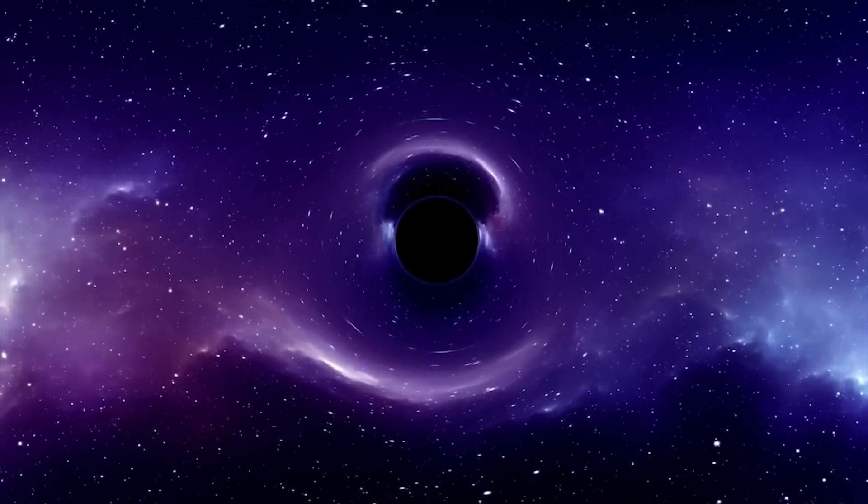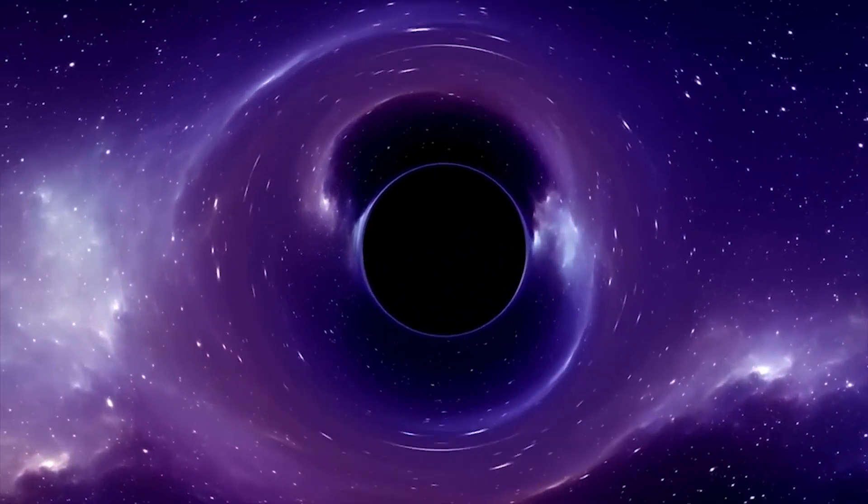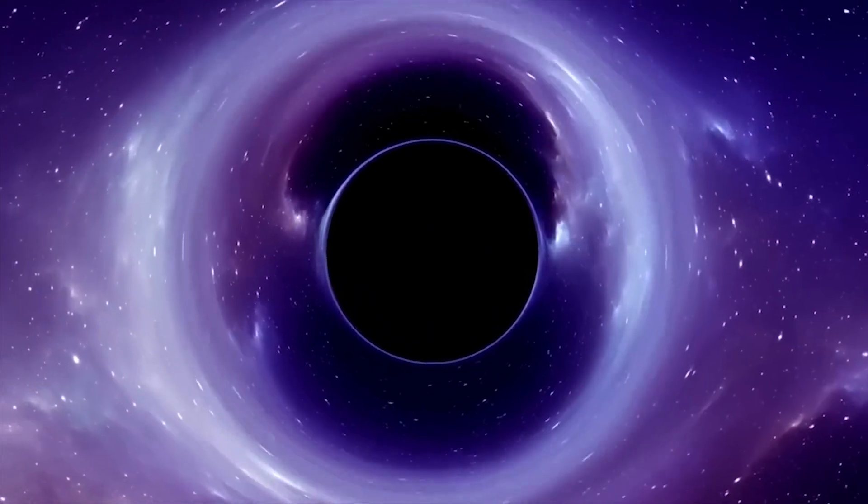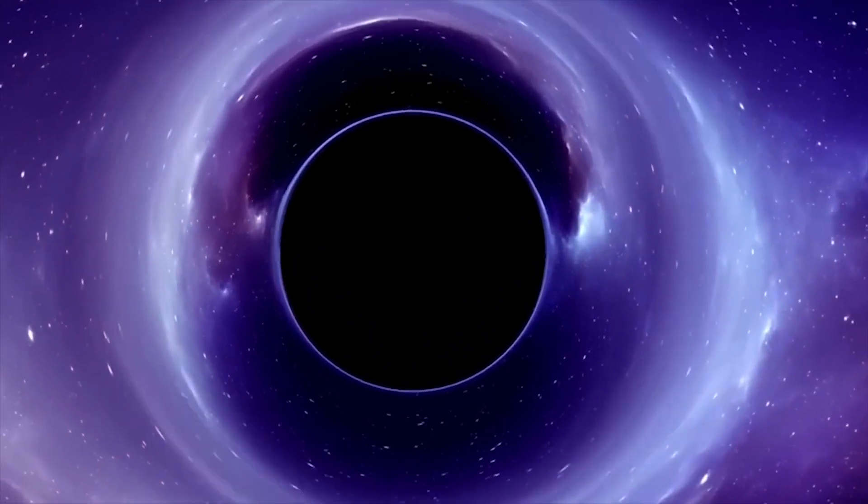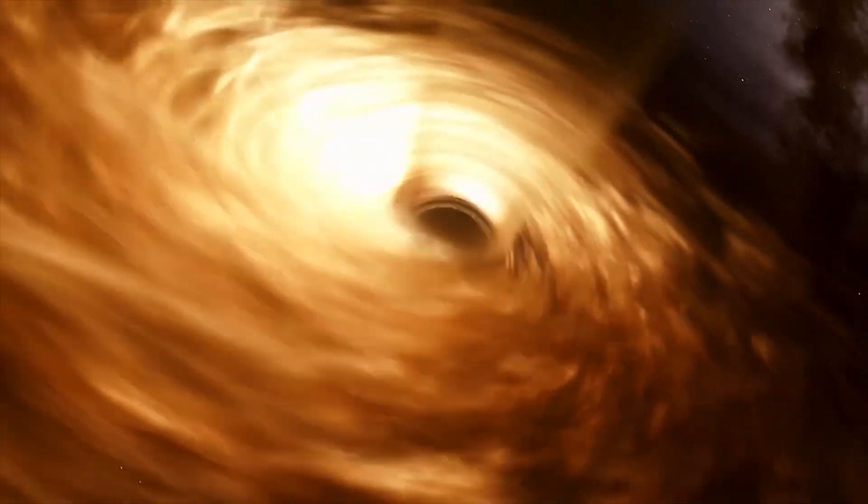TON 618's immense gravitational pull is so strong that it attracts nearby matter, including gas, dust, and even entire stars, into its gravitational grasp. As these objects draw closer to the black hole, they experience intense tidal forces, a result of the significant difference in gravitational pull between the side of the object facing the black hole and the side facing away.